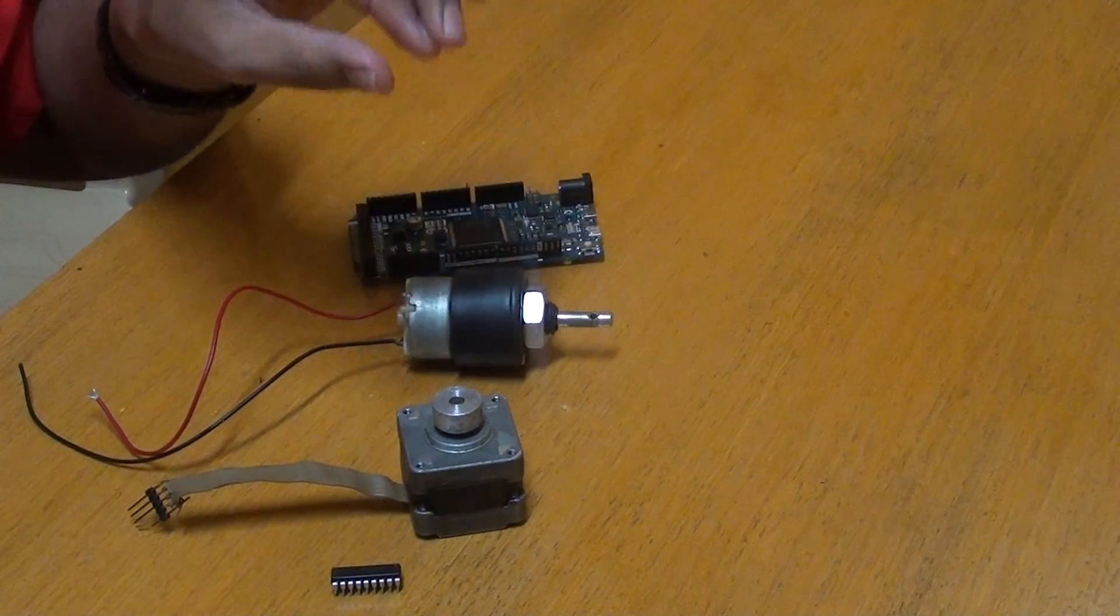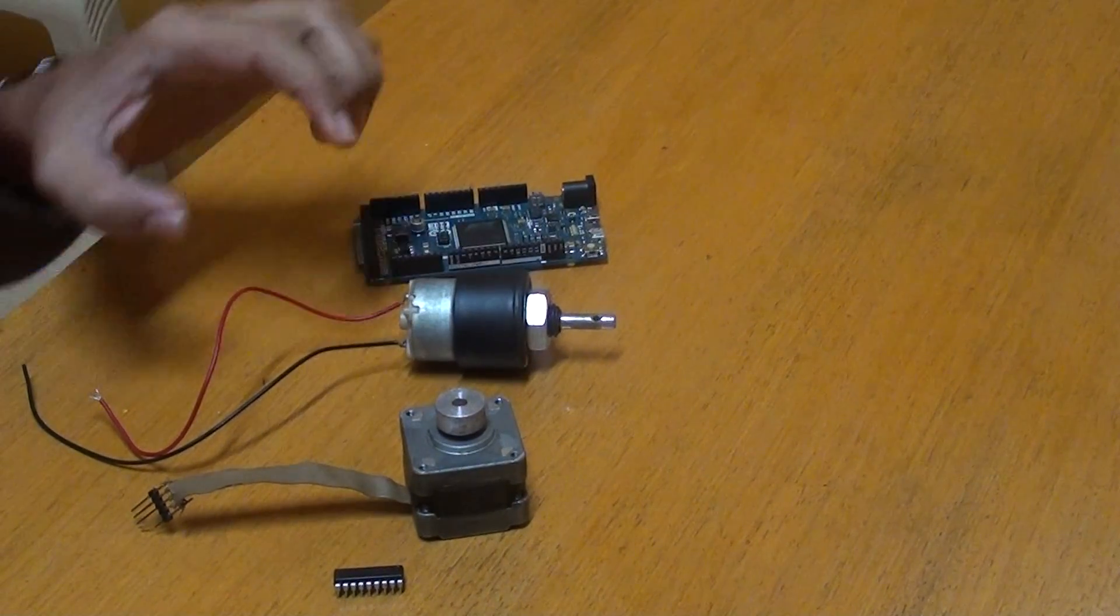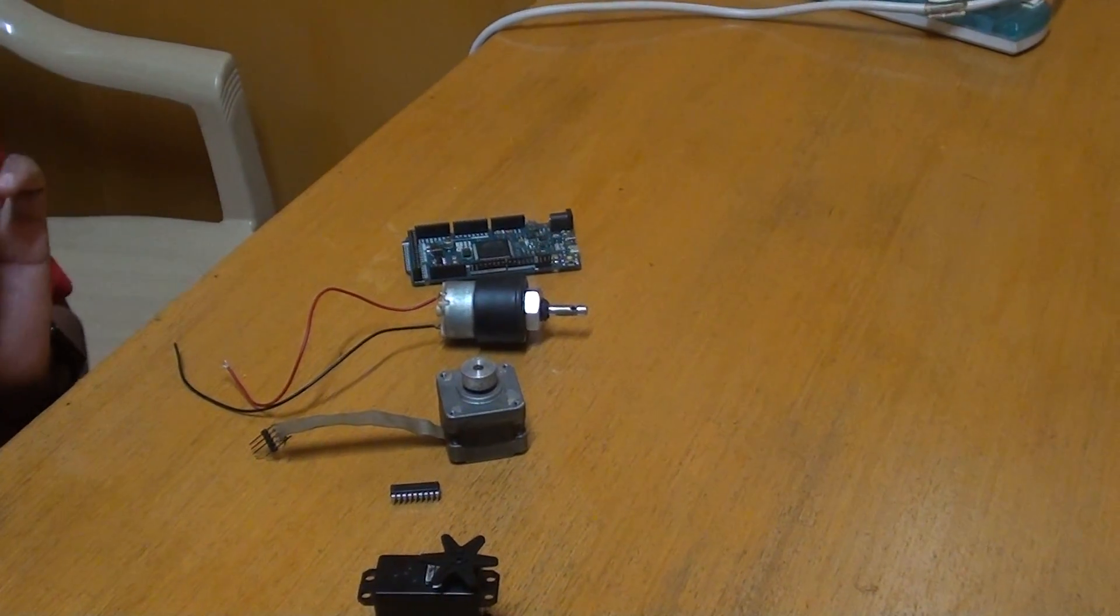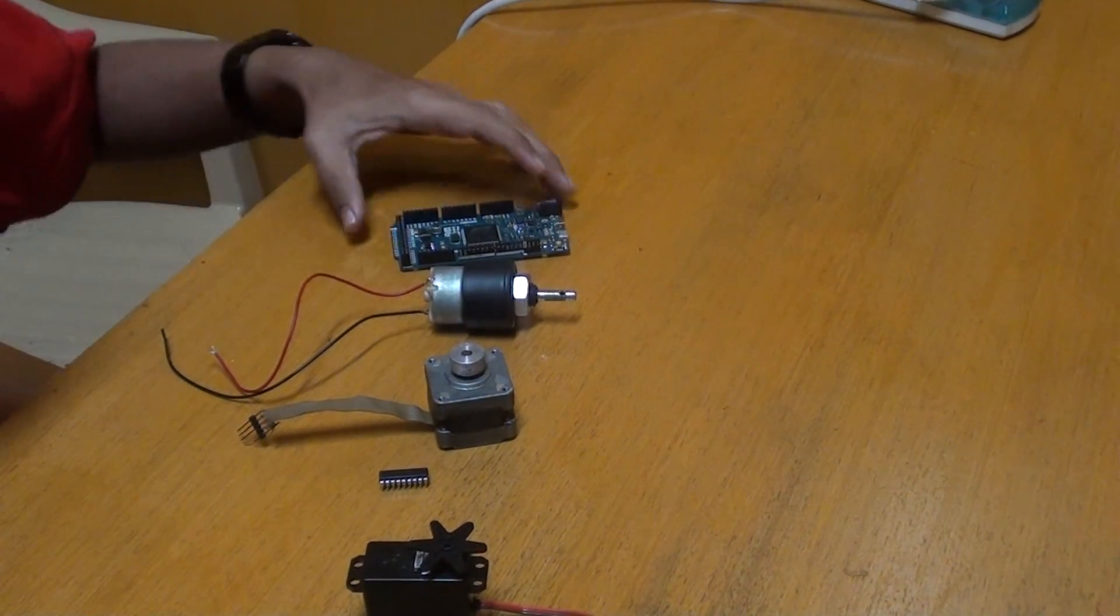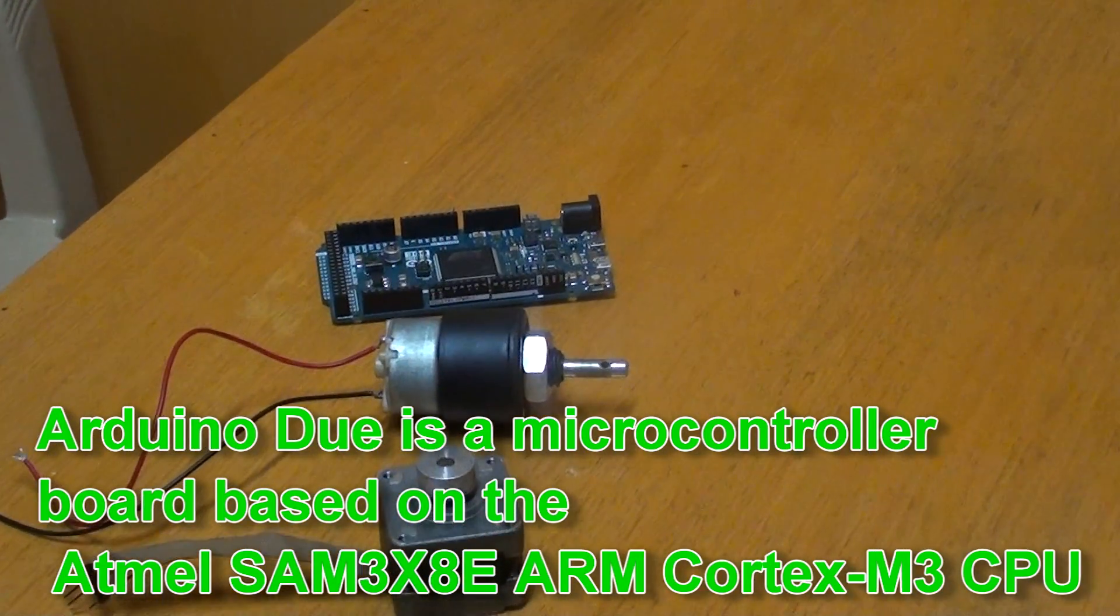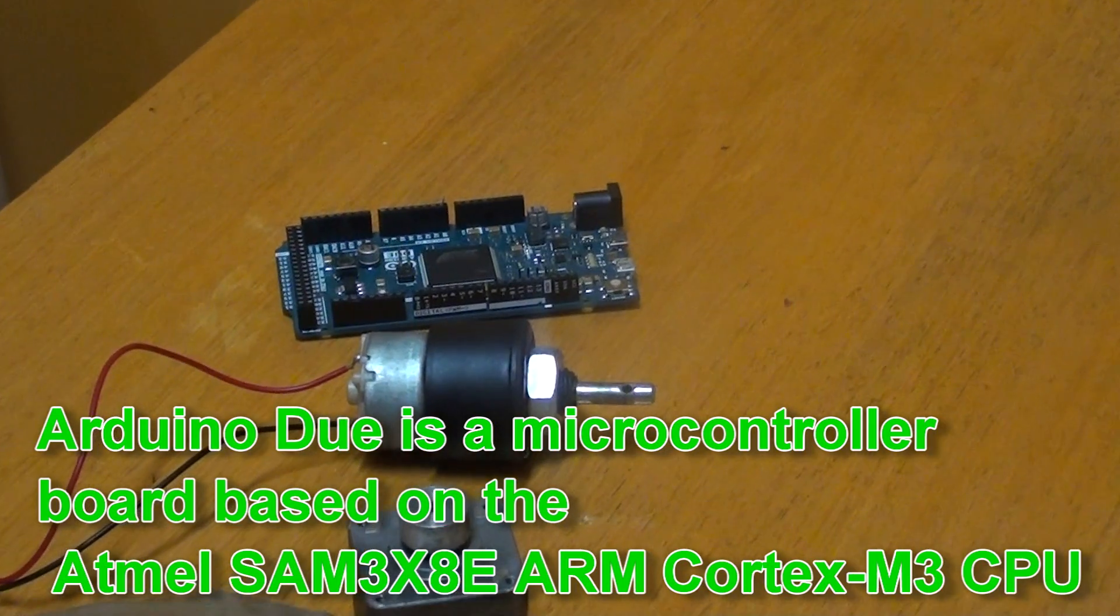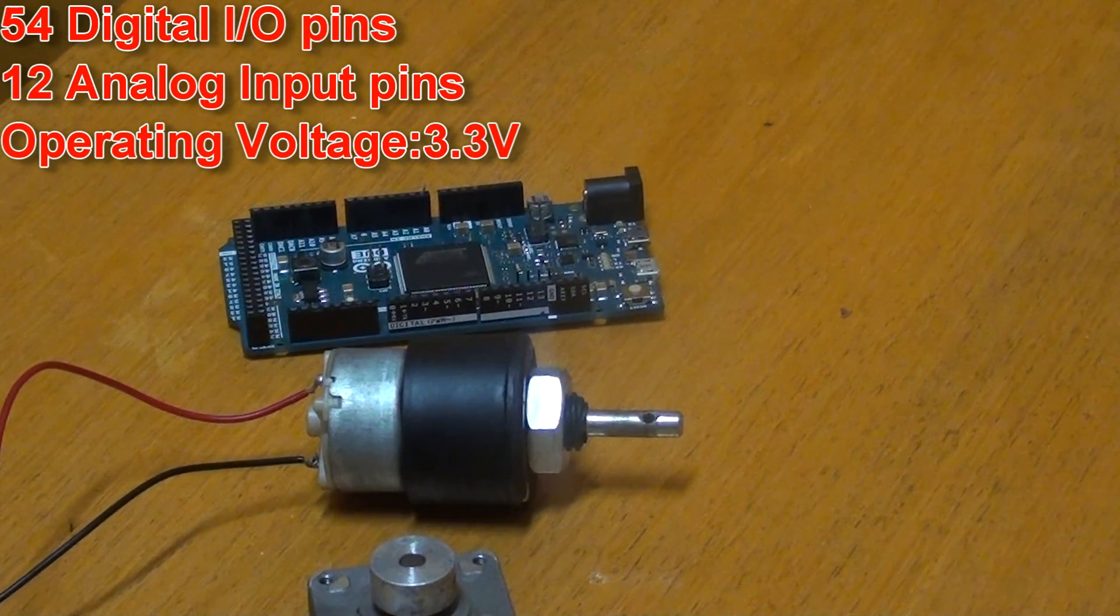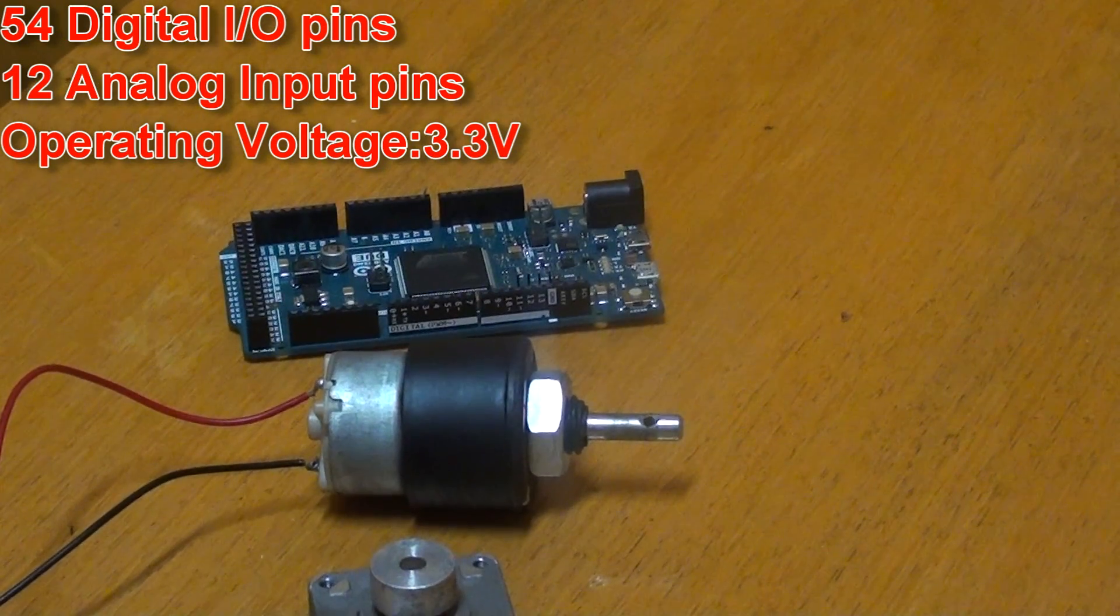Before that, I'll give an introduction to Arduino Doom. Arduino Doom is a microcontroller with 54 digital input/output pins, of which 12 can be used as pulse width modulation (PWM) outputs, 12 analog inputs, and runs at an 84 megahertz clock signal.